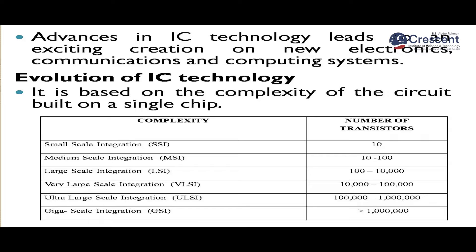Next came Large-Scale Integration (LSI), where 10,000 transistors can be integrated into a single chip. Then VLSI — Very Large-Scale Integration — allowed up to 100,000 transistors. ULSI, Ultra Large-Scale Integration, supports up to 1,000,000 devices, and GSI, Giga-Scale Integration, allows more than millions of transistors in a single IC.